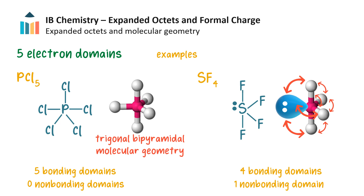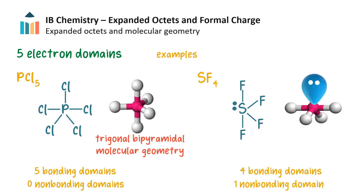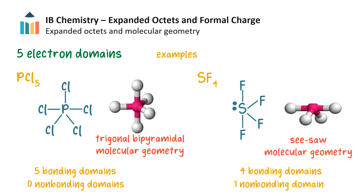In sulfur tetrafluoride, however, the electron domains are not equivalent — the lone pair exerts a greater repulsion than the bond pairs. The electron domain geometry is trigonal bipyramidal, but turning the molecule on its side and focusing only on the atoms and bonds, not the lone pair, we can see that the molecular geometry is see-saw.